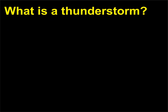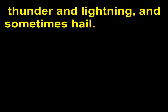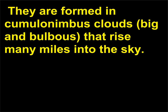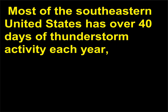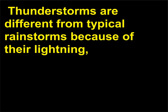What is a thunderstorm? Thunderstorms are localized atmospheric phenomena that produce heavy rain, thunder and lightning, and sometimes hail. They are formed in cumulonimbus clouds, big and bulbous, that rise many miles into the sky. Most of the southeastern United States has over 40 days of thunderstorm activity each year, and there are about 100,000 thunderstorms across the country annually. Thunderstorms are different from typical rainstorms because of their lightning, thunder, and occasional hail.